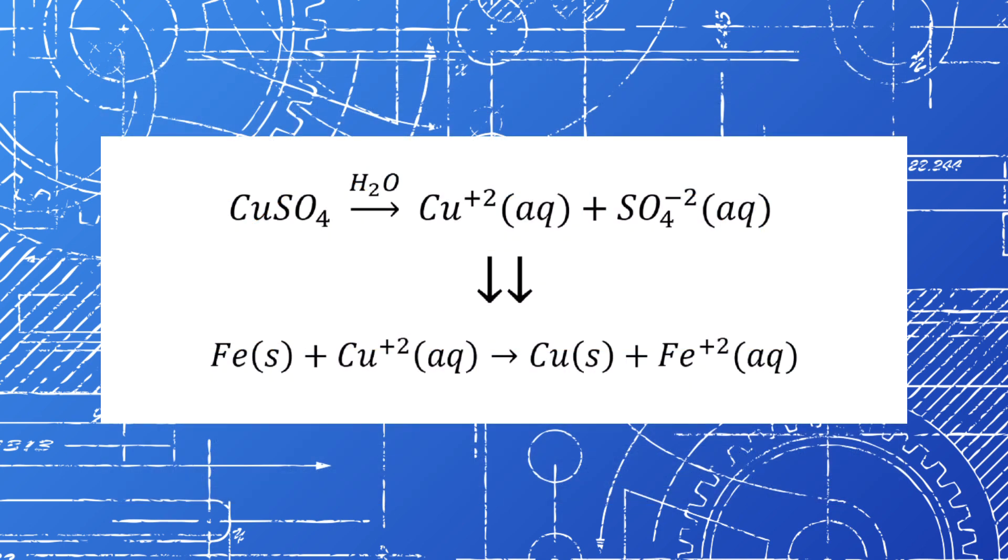The copper will then obtain two electrons from one of the iron atoms and the copper will become the solid form of copper and deposit on the surface of the iron. And the iron atom that gave up its electrons will go into solution as an iron cation.